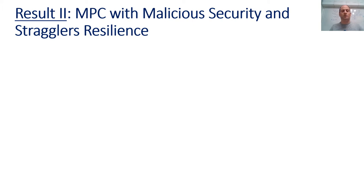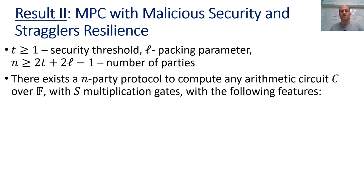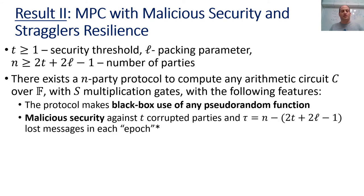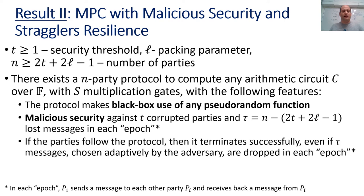Our second result is an MPC protocol with malicious security and straggler resilience. Given a security threshold T, packing parameter L, and number of parties N equal to or larger than 2T plus 2L minus 1, there exists a protocol to compute any arithmetic circuit C over a finite field F with S multiplication gates. The protocol makes only black box use of any pseudorandom function, achieves malicious security against T corrupted parties even if tau messages are lost in each epoch — where tau is N minus 2T plus 2L minus 1 — and terminates successfully even if tau messages chosen adaptively by the adversary are dropped per epoch.